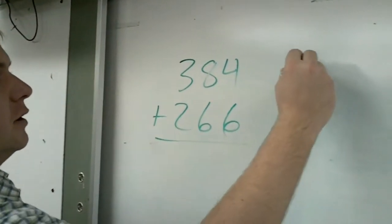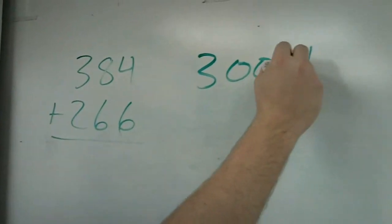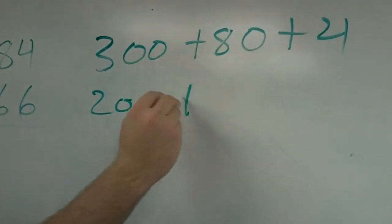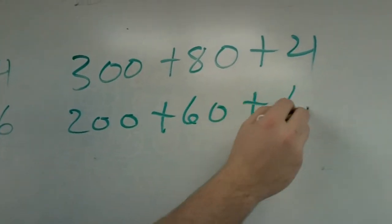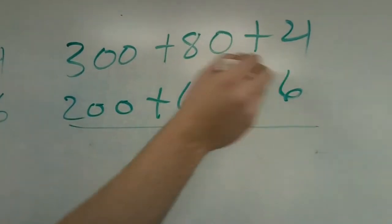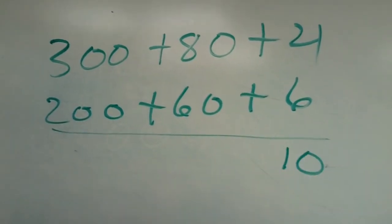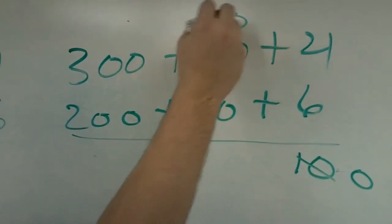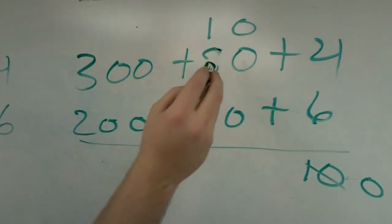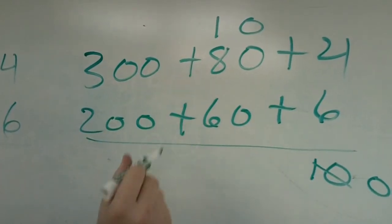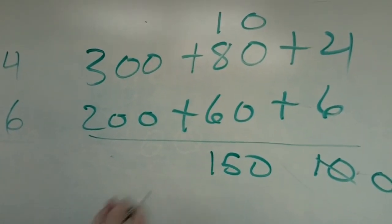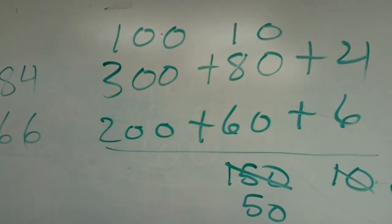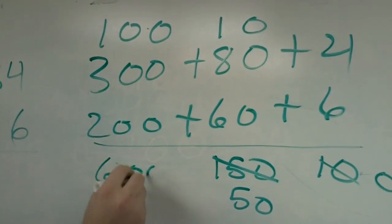Okay, so we're going to write this out in expanded form. 300 plus 80 plus 4. The other number is 200 plus 60 plus 6. 4 plus 6 is 10. Even though it's only 10, it's still too big to be in that column. We're going to take it all away and make it 0 so that we can put the whole 10 there. 10 plus 80 is 90, plus 60 is 150. Again, that's too large for this column. We'll make it 50 and bring the 100 over here. 100 plus 300 plus 200 is 600.